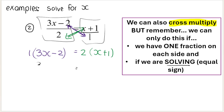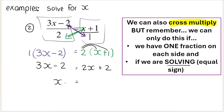1 multiplied by anything is itself. Then 2 times x is 2x, and 2 times 1 is 2. We get the exact same answer: x is equal to 4.